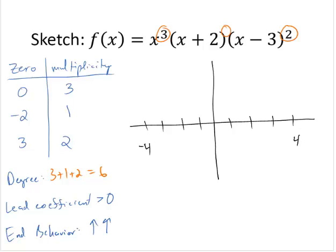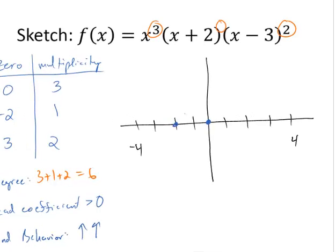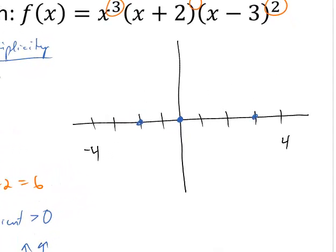All right, plotting the zeros. I have a zero at 0, a zero at negative 2, and a zero at 3. End behavior: the curve starts at the top left. Now at negative 2, it has multiplicity 1, so it's going to just pass through the curve, it doesn't flatten out. It's going to go down for a while and come back up.